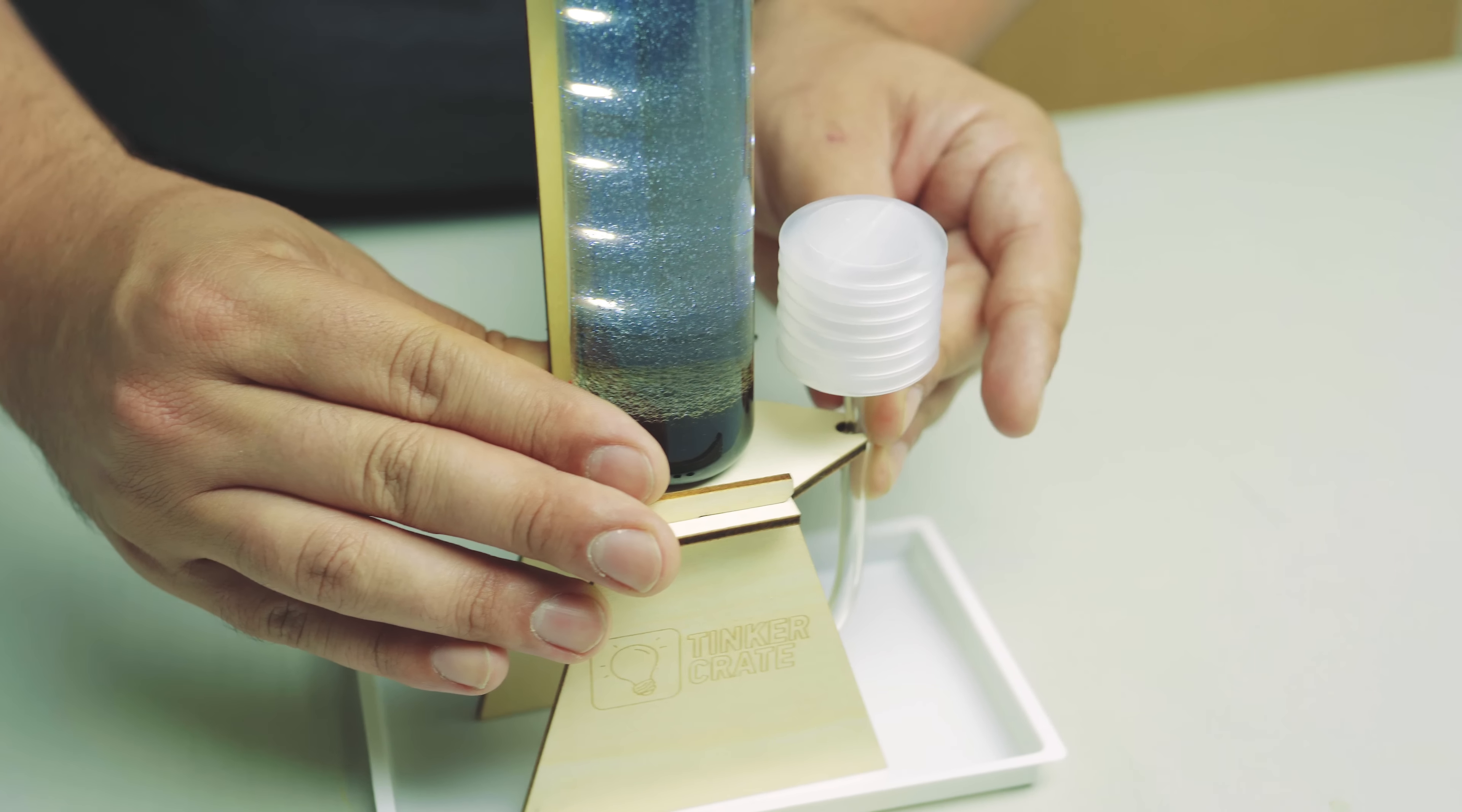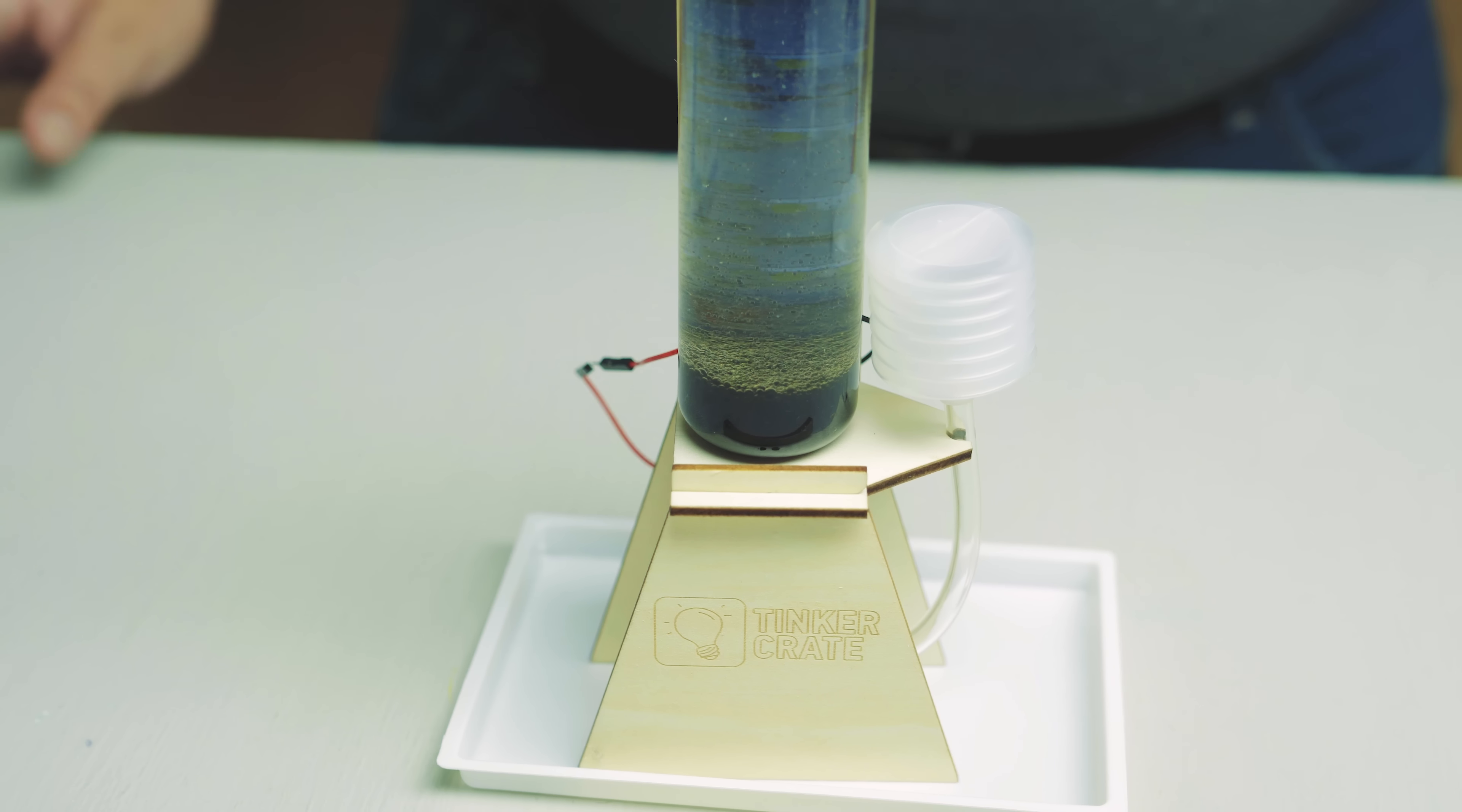To store your bubble lamp, clip the pump into the notch on the side of the frame, disconnect the battery, and leave it in the tray.